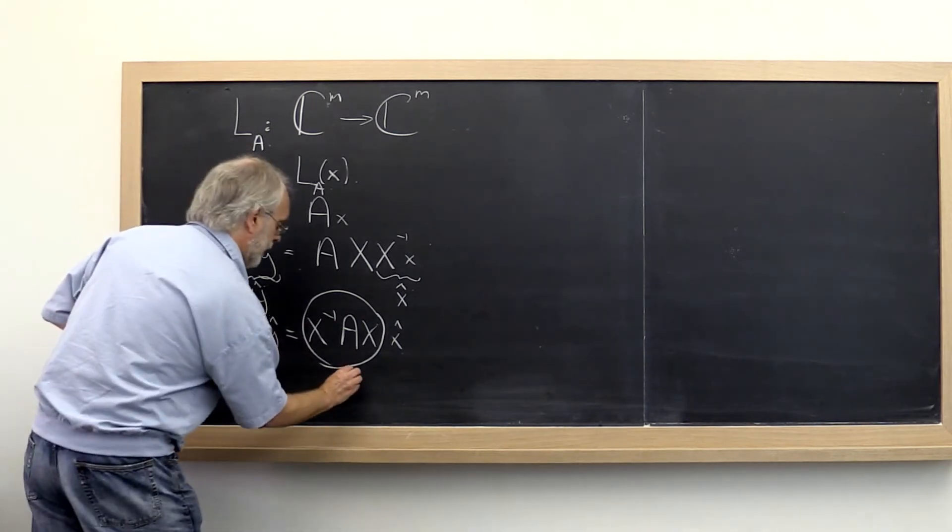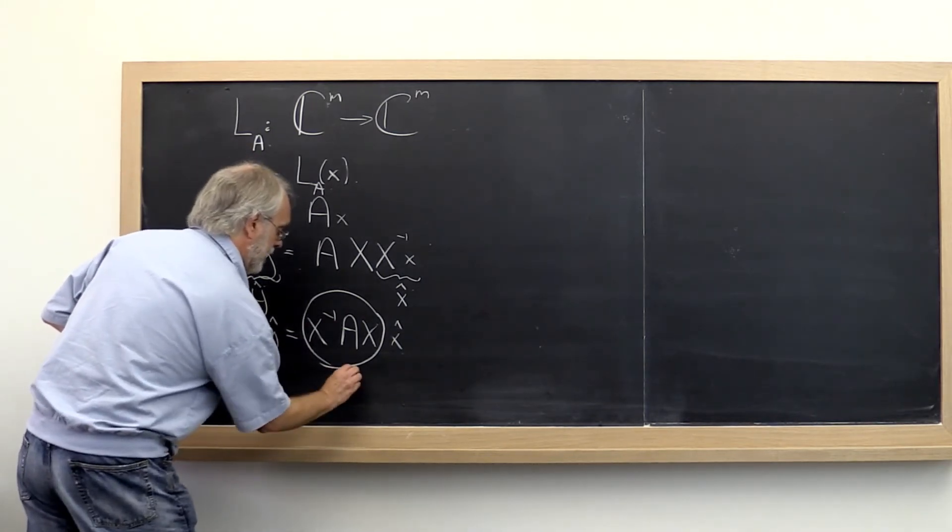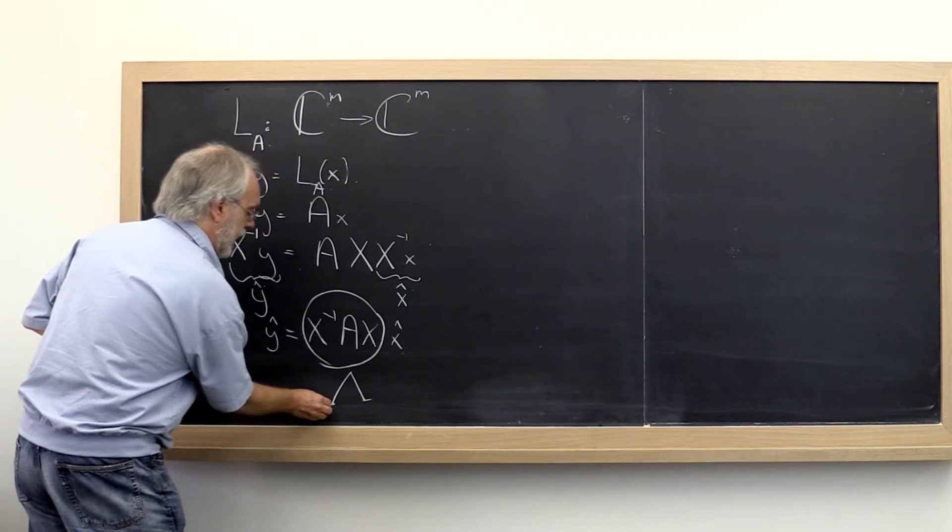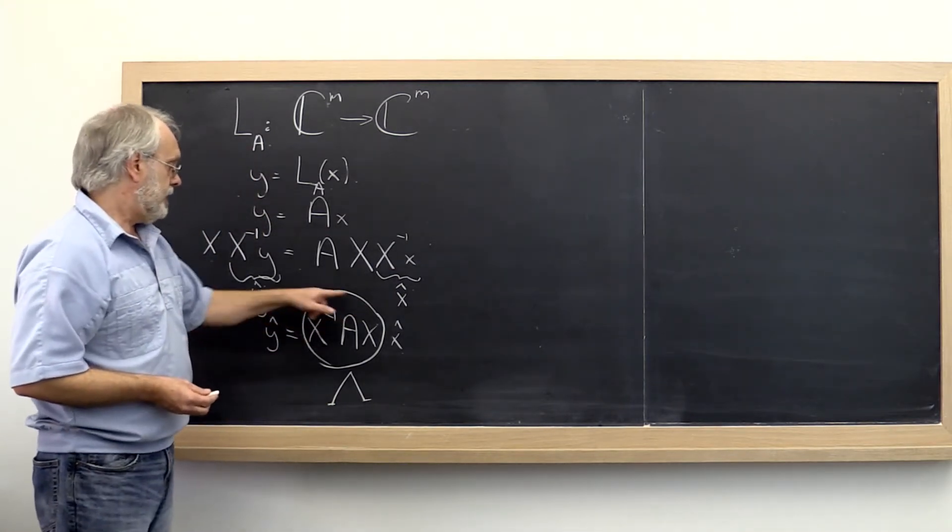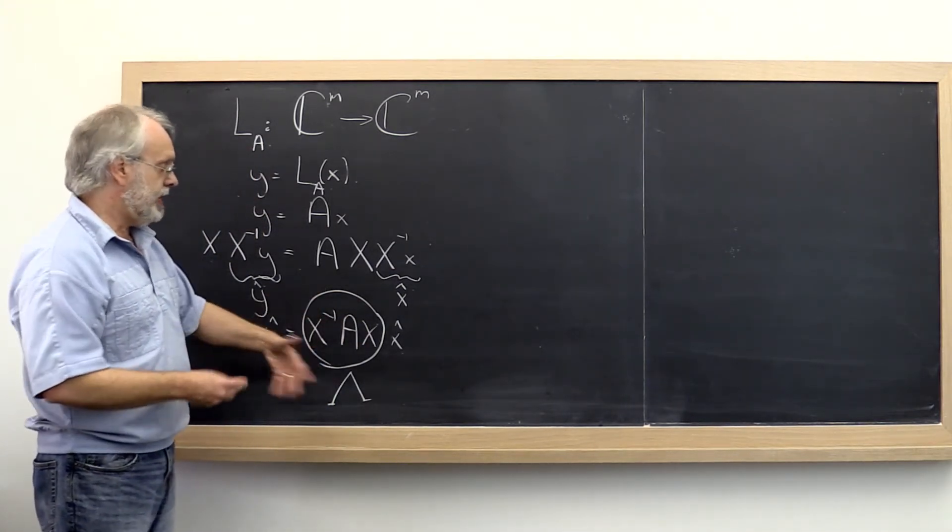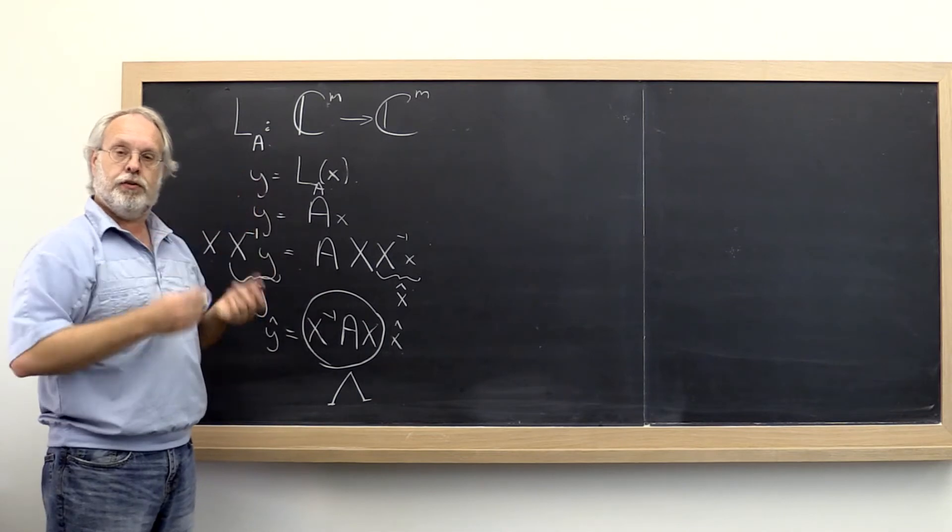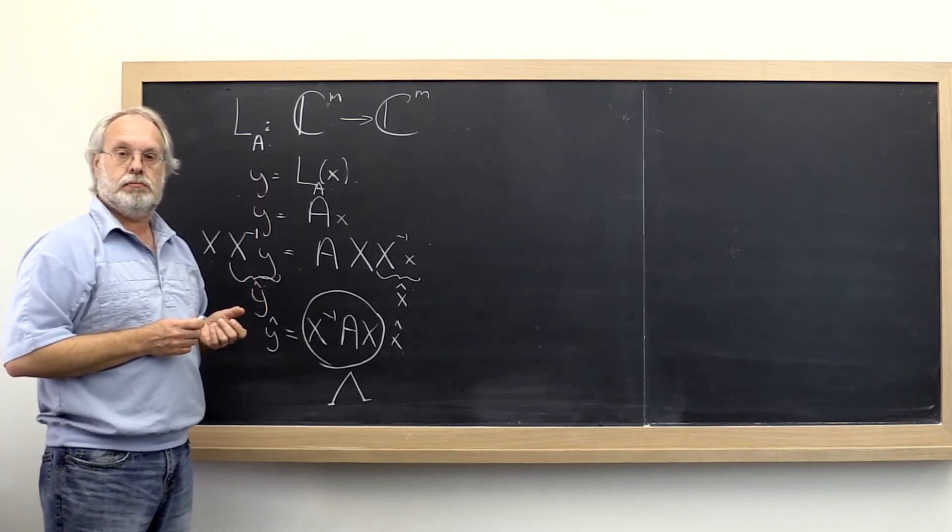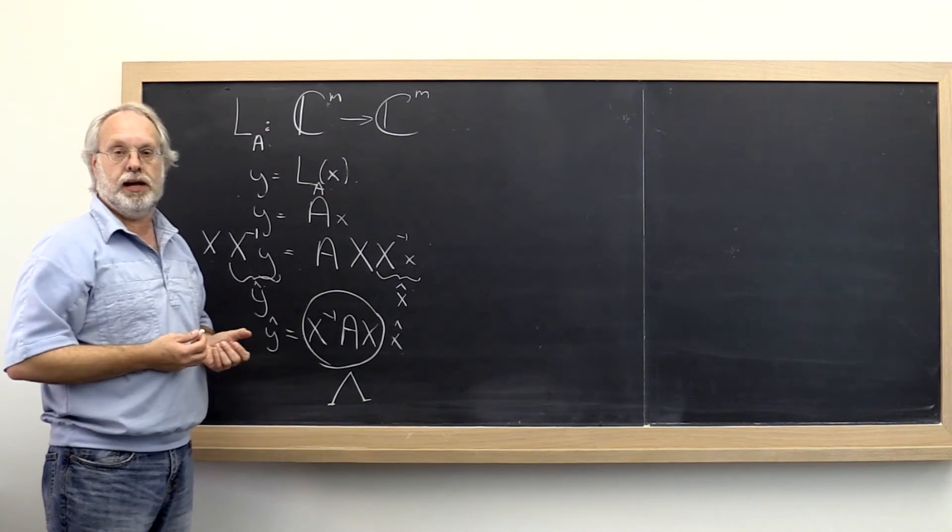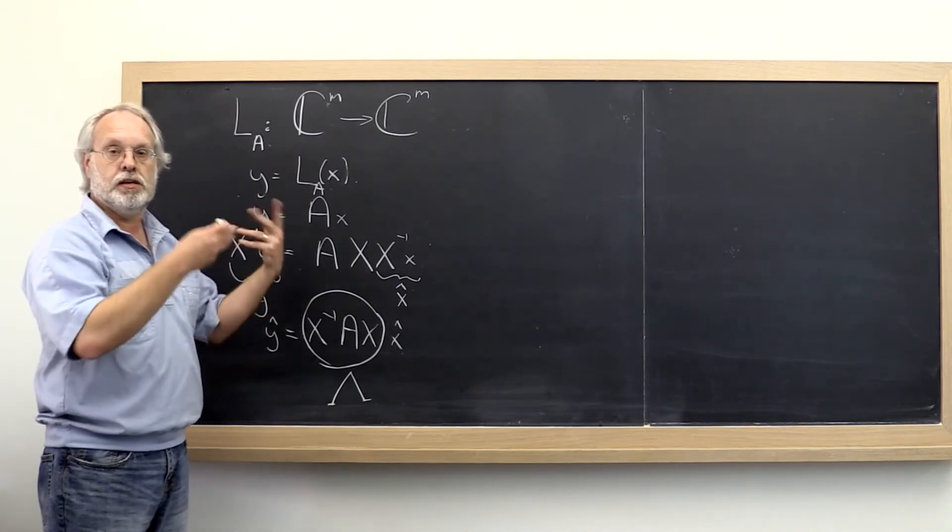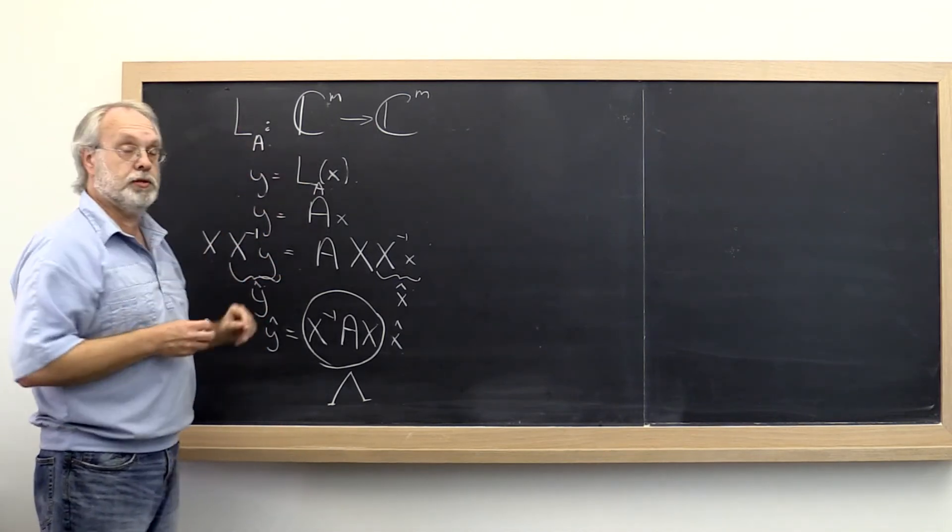Wouldn't it be nice if there was a matrix, let's call it capital lambda, that was this right here? Because then all of a sudden everything falls nicely in place. And isn't it much nicer to multiply with a diagonal matrix than it was to multiply with sort of an arbitrary matrix?